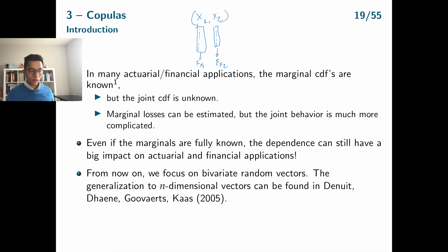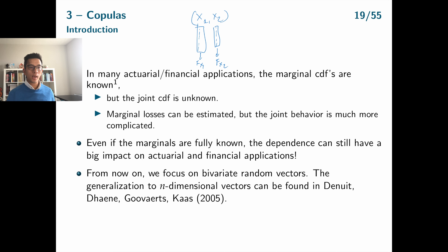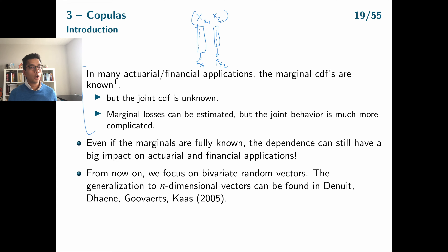But assume that we do not know anything about the dependence — we do not know how x1 and x2 are moving together. Remember from the previous part: even when the marginals did not change, the dependence structure could be very different. You can have positive or negative dependence, upper tail dependence, or lower tail dependence. So dependence is another important ingredient we need before making statements about the random vector (x1, x2). The marginal CDFs are known, but the dependence is not.